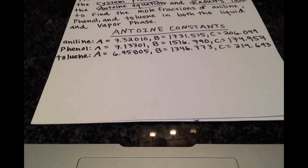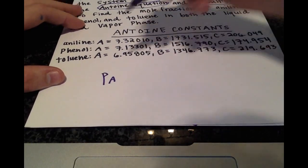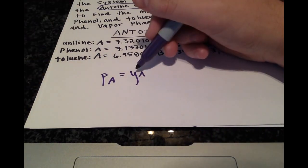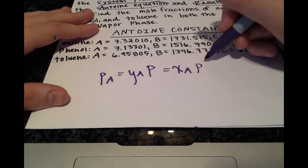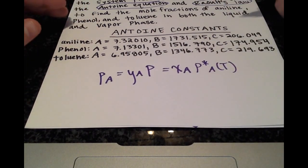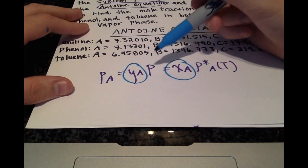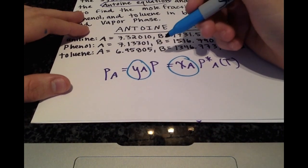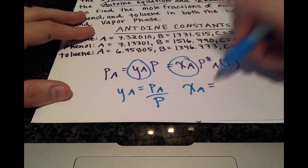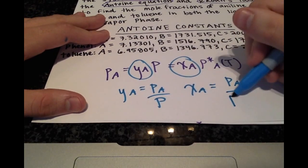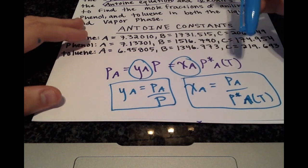Okay, so a good starting point is just to write out the general formula for Raoult's Law. That's the partial pressure of A equals the mole fraction of A in the vapor phase times the total pressure equals the mole fraction of A in the liquid phase multiplied by the vapor pressure of A at a specified temperature.